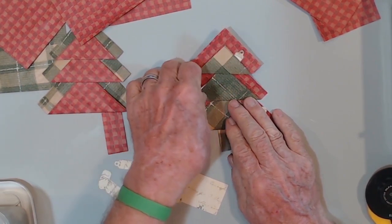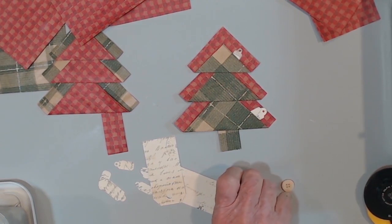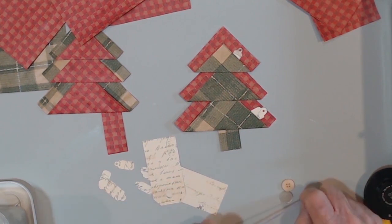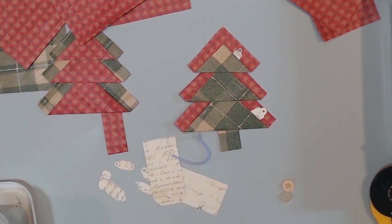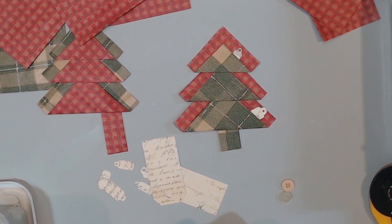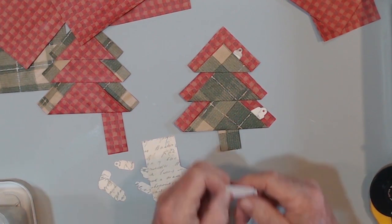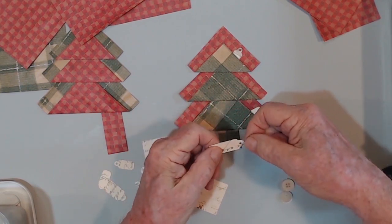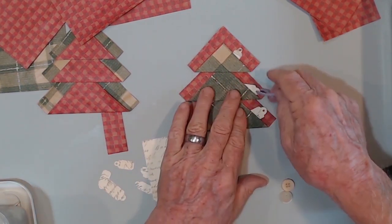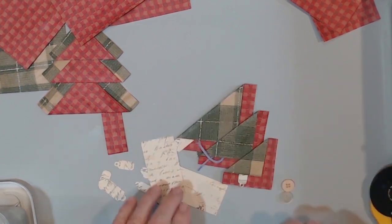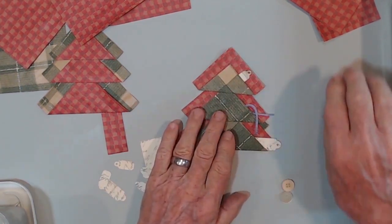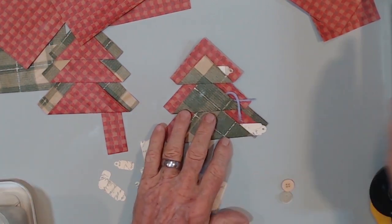Now what I would do maybe is take some kind of cording, some pretty cording. I have this. It's too thick but I'll just show you what I mean. Take some cording of any kind. I would use floss because it's pretty and put it into the tag. And then you put the tag in and you have tinsel or pretty little decorative threads.